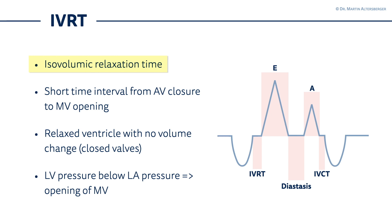Why is it called IVRT? In the name it's isovolumic, so there are no volume changes within the ventricle. It's a relaxed ventricle with no volume changes because the valves are closed — volume cannot move — and the LV pressure is still below the left atrial pressure, and that at some point leads to the opening of the mitral valve.